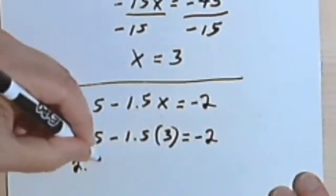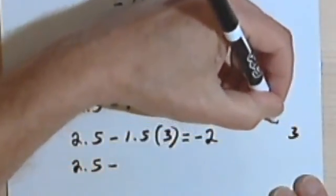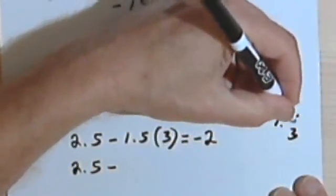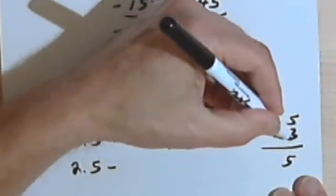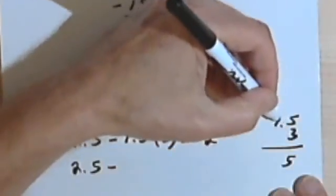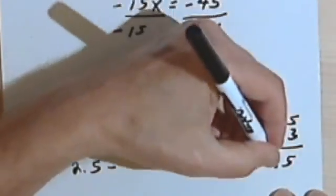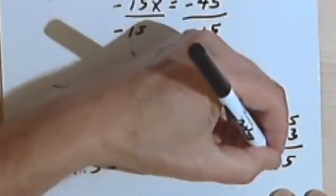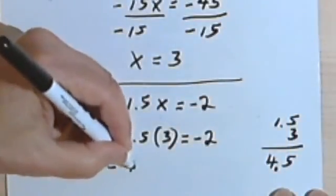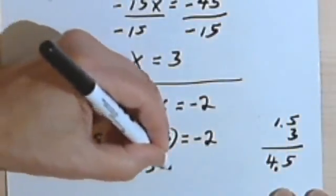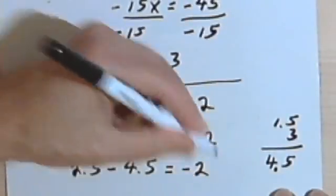So 2.5 minus, let's just try this multiplication over here to make sure we get it right, 1.5. So 3 times 5 is 15, I carry a 1. 3 times 1 is 3, plus the one I carry is 4. But I had a decimal point, so I've got a decimal place here also. So this is just going to be minus 4.5 equals negative 2.